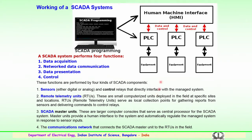What are the four SCADA components? First are the sensors — these could be digital or analog — and control relays that directly interface with the managed system. Second are the remote telemetry units (RTUs), which are small computerized units deployed in the field at specific locations. RTUs serve as local data collection points. The data gathered from sensors is sent through the PLCs for data control and is being sent to the SCADA terminal, delivering commands to the control through the relays.